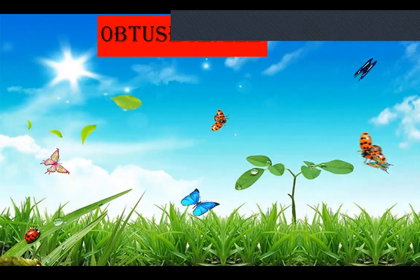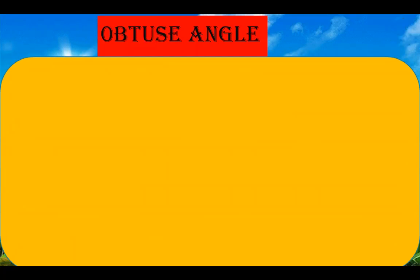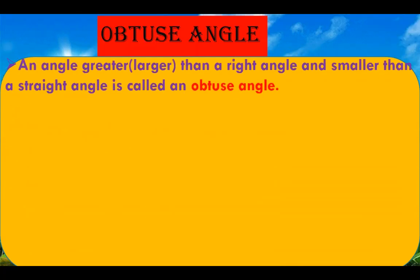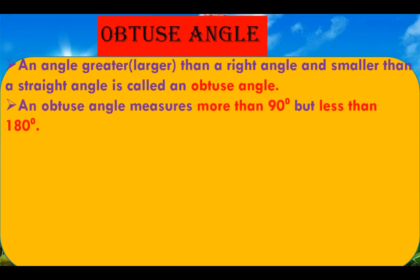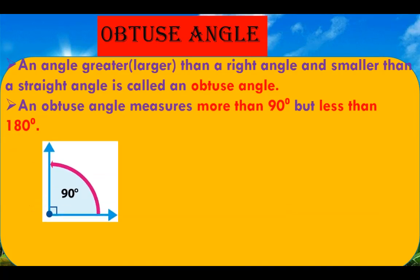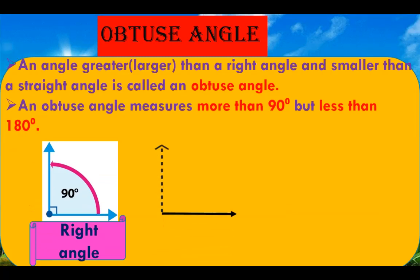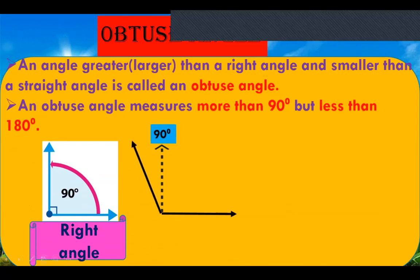Now obtuse angle. An angle greater or larger than a right angle and smaller than a straight angle is called an obtuse angle. An obtuse angle measures more than 90 degrees but less than 180 degrees. Here, this is a right angle measuring 90 degrees, and here you can see an obtuse angle measuring greater than 90 degrees.